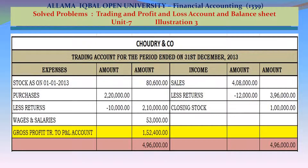Solution — Chowdhury & Company Trading Account for the period ended 31 December 2013. On the income side: Sales 408,000; less returns 12,000; net sales 396,000. Closing stock 100,000. Total income 496,000.